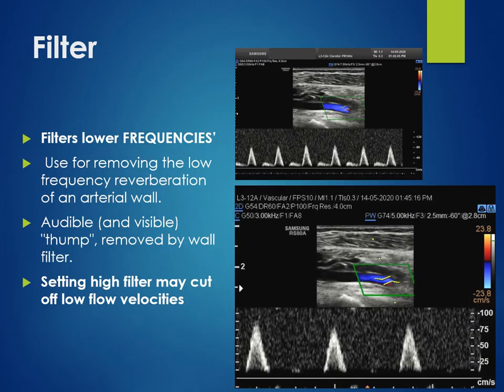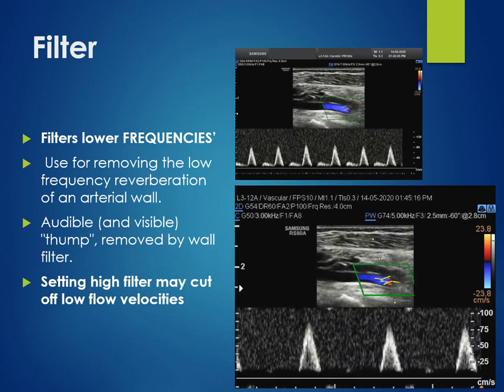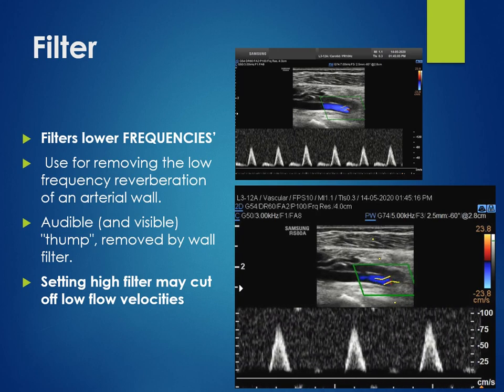Use of filter is sometimes required when you want to cut off the lower velocities — for example, from the adjoining vein — or when you want to cut off the reverberation from the arterial wall.